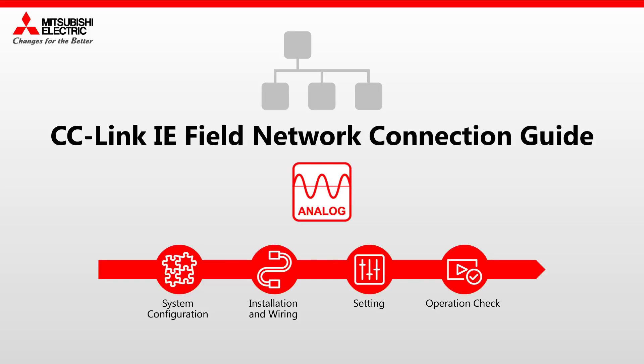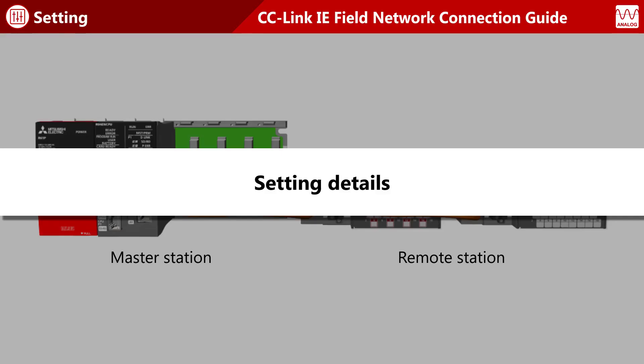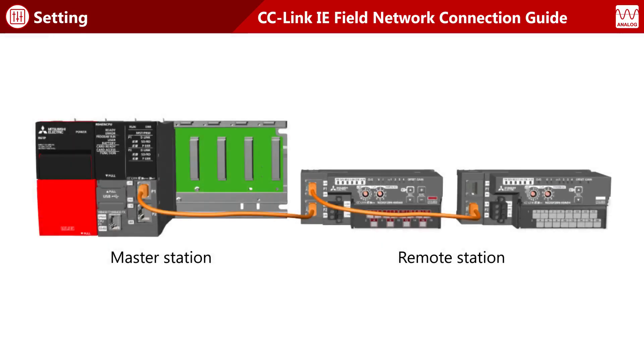See the C-Link IE Field Network Connection Guide for Analog I/O. Now that the wiring is finished, let's move on to the settings.